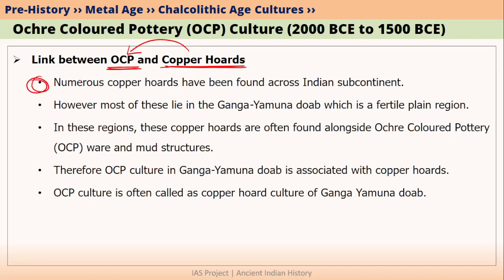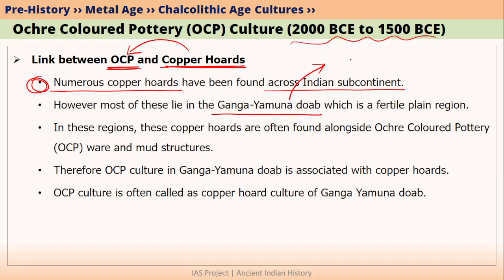In India, we have found numerous copper hoards everywhere within the Indian subcontinent. However, most of these copper hoards are actually found from Ganga Yamuna Doab. We know that in Ganga Yamuna Doab, in this timeline, OCP culture was existing. That is why we tried to link OCP culture people with the copper hoards found in these regions.